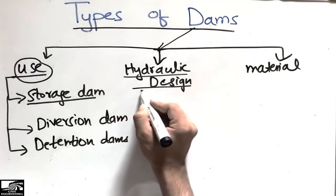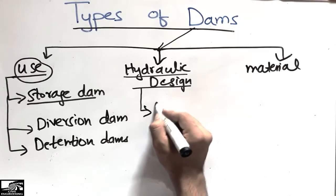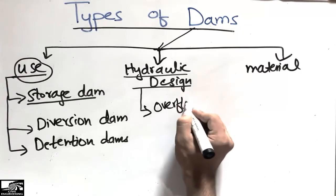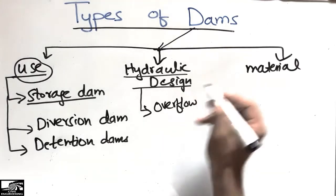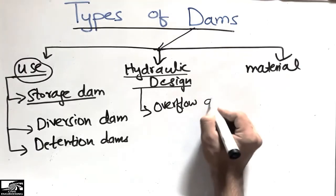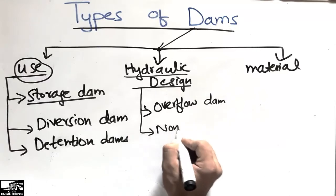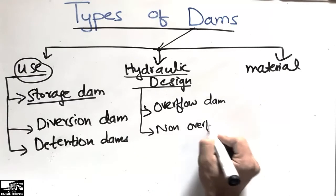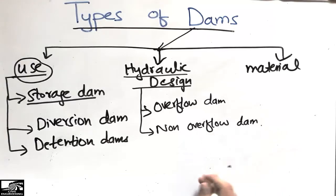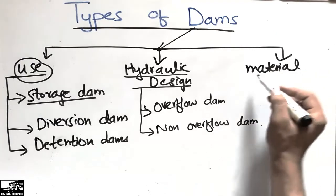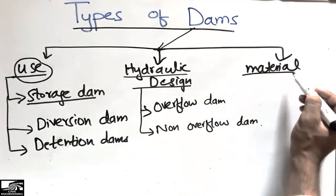For the hydraulic design classification, there are two types. One is the overflow dam — when the level of water is higher and water overflows. The other one is the non-overflow dam.